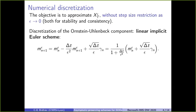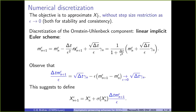To avoid stability issues, the solution is to use a linearly implicit Euler scheme to discretize the Ornstein-Uhlenbeck component. M Epsilon is defined implicitly because M Epsilon appears on the right-hand side. Then, just as in the previous analysis, delta T times M Epsilon divided by Epsilon at time N+1: if we take the definition of the scheme, multiply by Epsilon, we see it converges to square root of delta T times gamma_N when Epsilon goes to zero and delta T is fixed. This suggests defining a scheme to approximate X Epsilon: X Epsilon_{N+1} equals X Epsilon_N plus sigma of X_N^Epsilon multiplied by this quantity in blue.